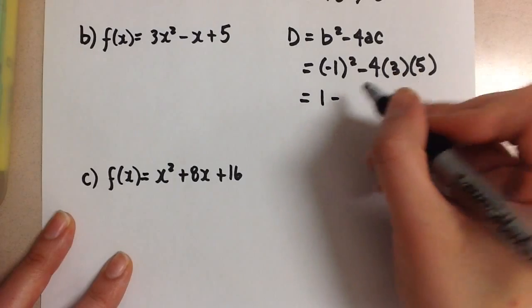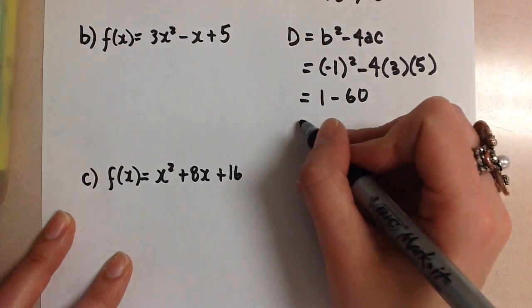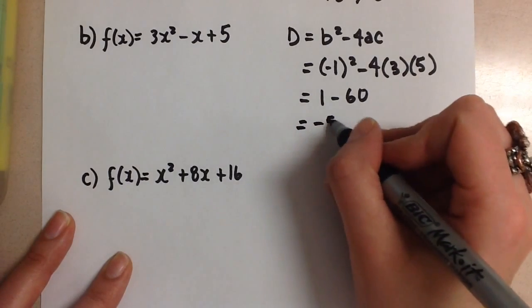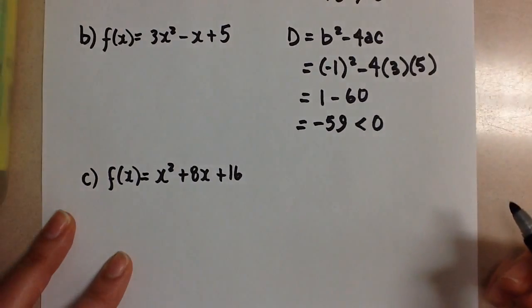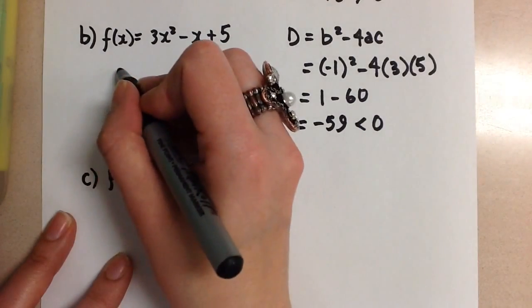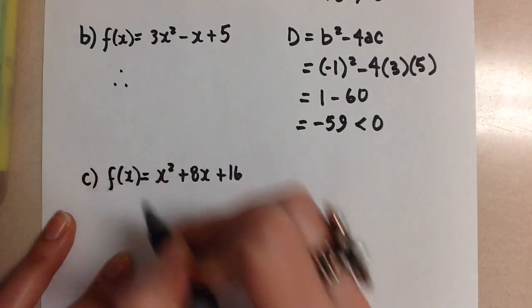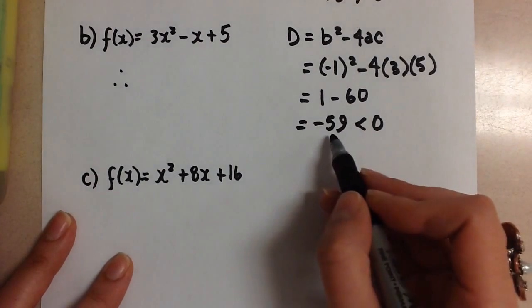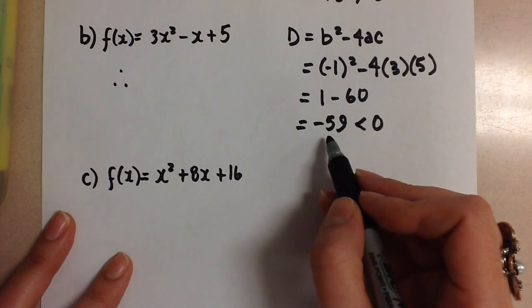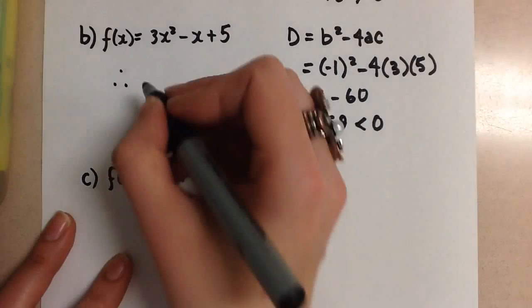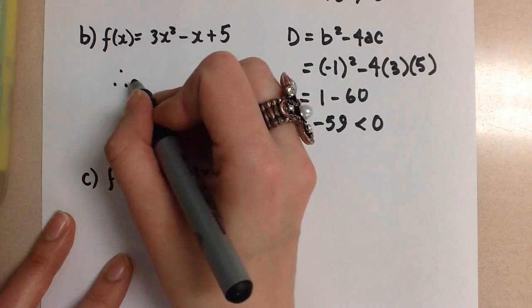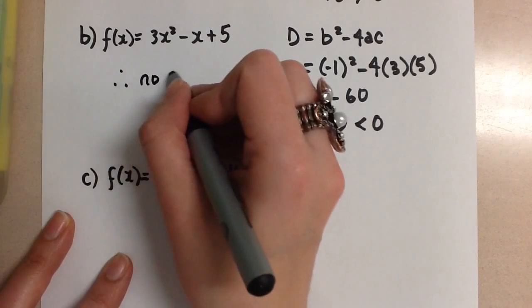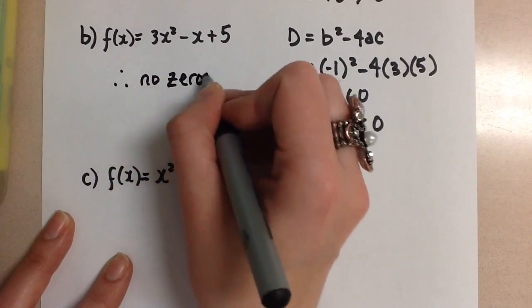we get 1 minus 60, which is equal to negative 59. Now this number is negative, less than 0, which means then that we are going to have no zeros for this quadratic since we can't take the square root of a negative number and get a real root back. So here we have no zeros for this quadratic.